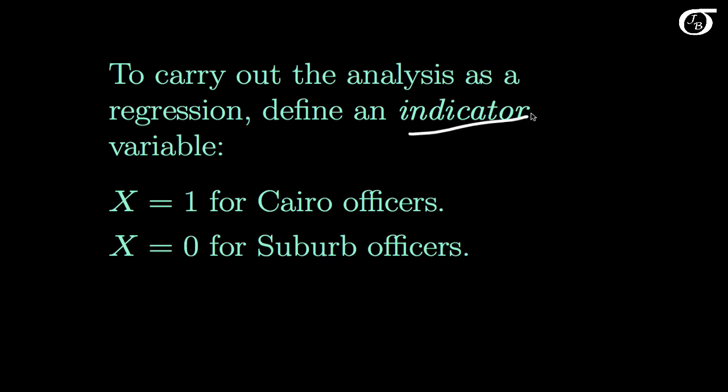Sometimes called a dummy variable, we're just going to let x equal 1 for Cairo officers and x equals 0 for suburb officers. I could have just as easily switched this and had 0 for Cairo and 1 for suburbs, or just use any two different values for x here. It's just that the choice of 0 and 1 make the interpretation a little bit easier.